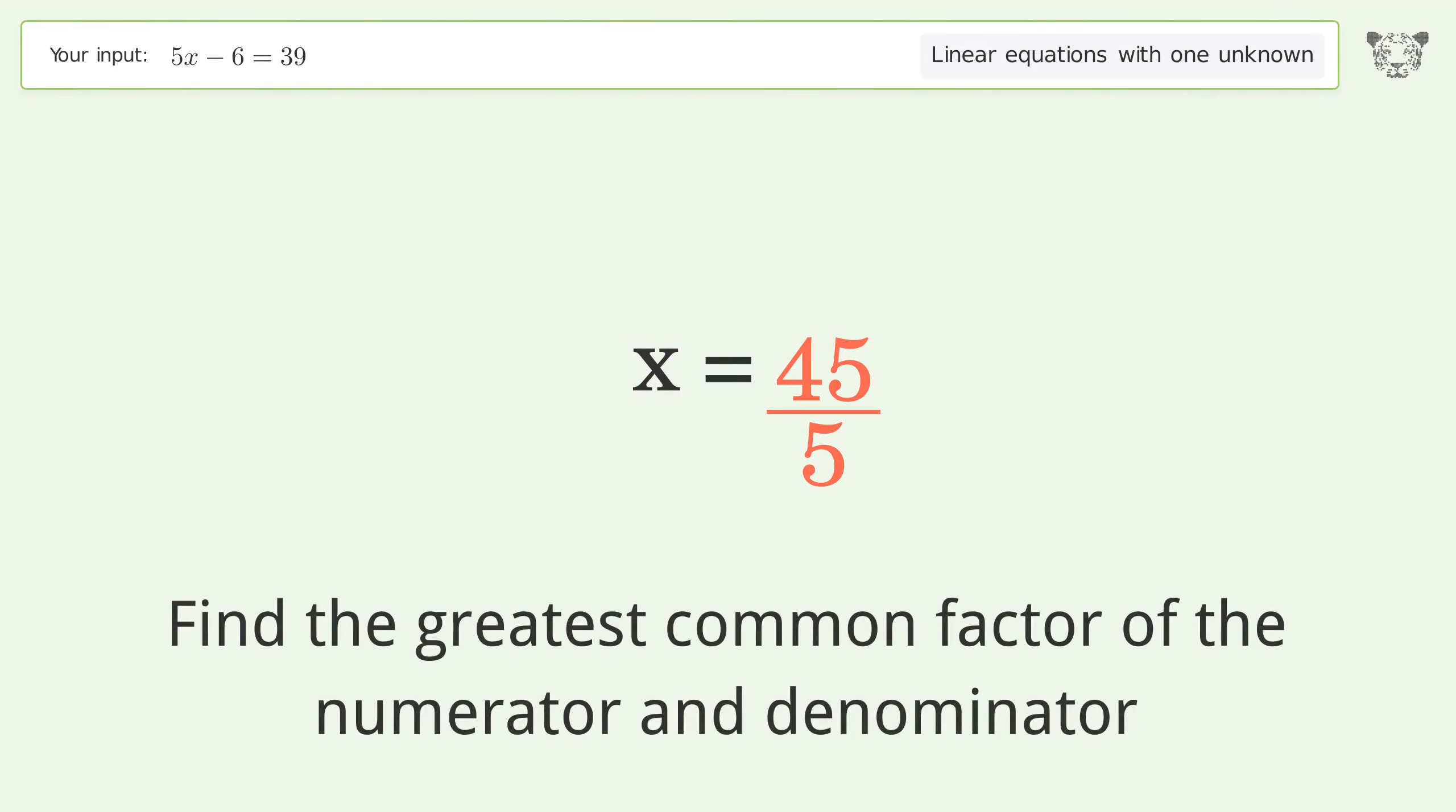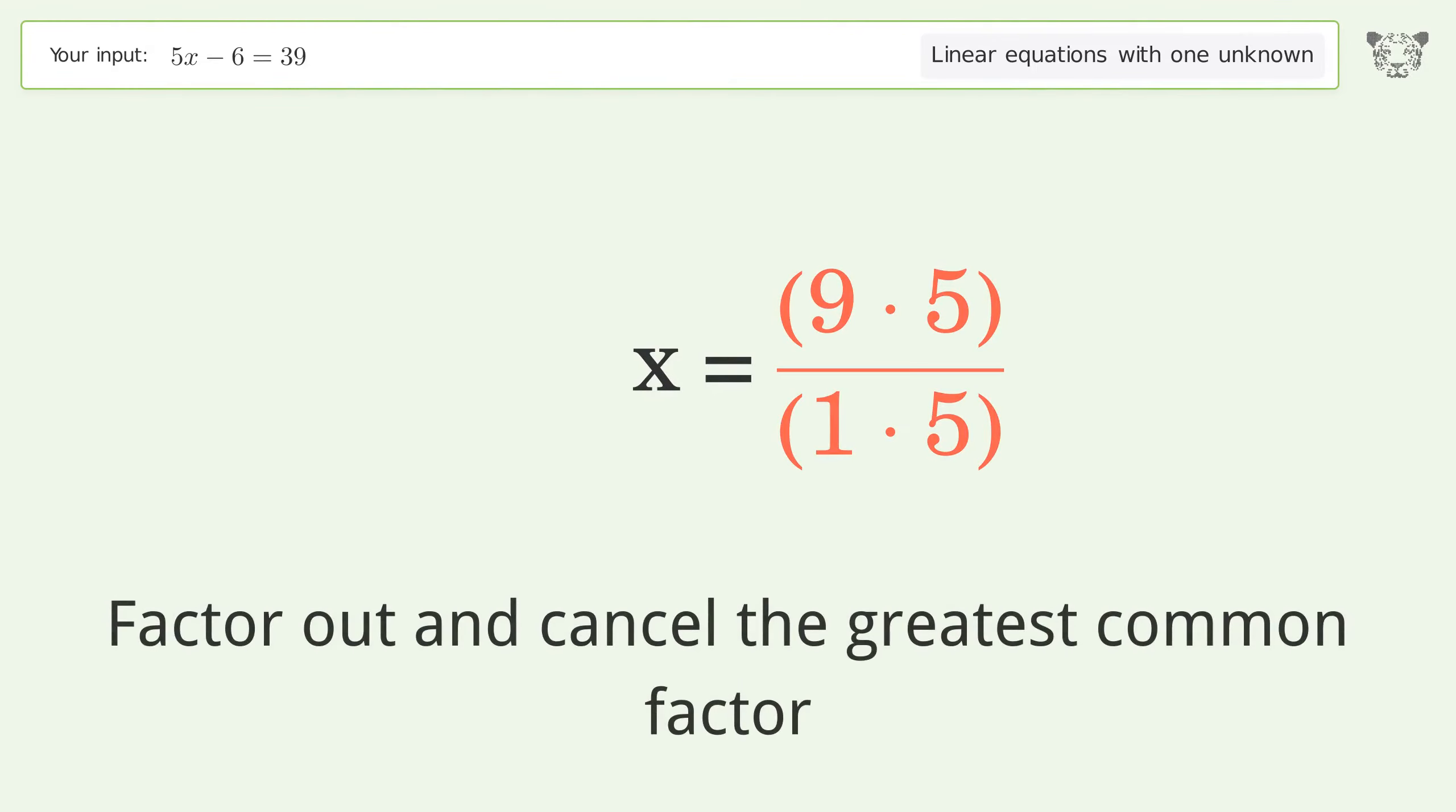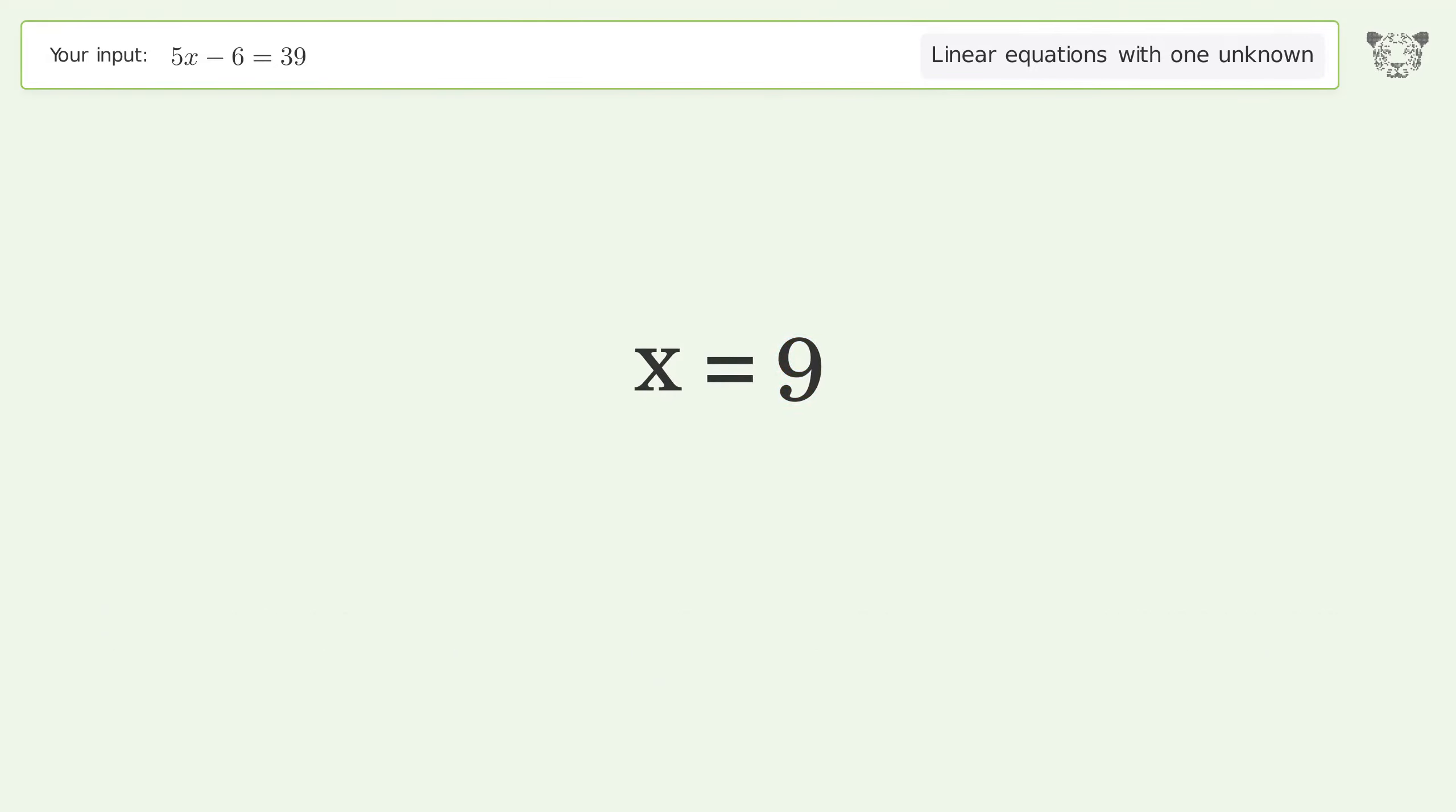Find the greatest common factor of the numerator and denominator. Factor out and cancel the greatest common factor. And so the final result is x equals 9.